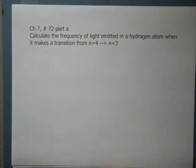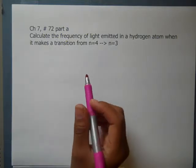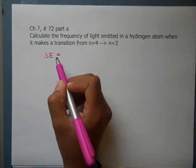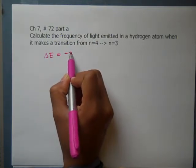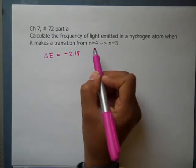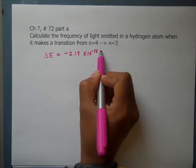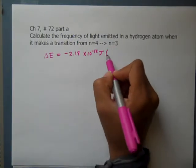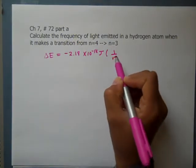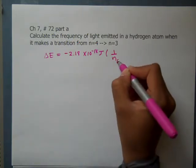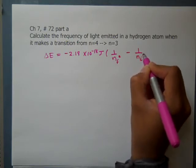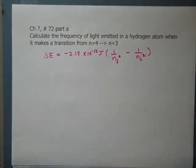We have one major formula for this, the Delta E formula: Delta E equals negative 2.18 times 10 to the negative 18 joules, and then we have 1 over n final squared minus 1 over n initial squared.